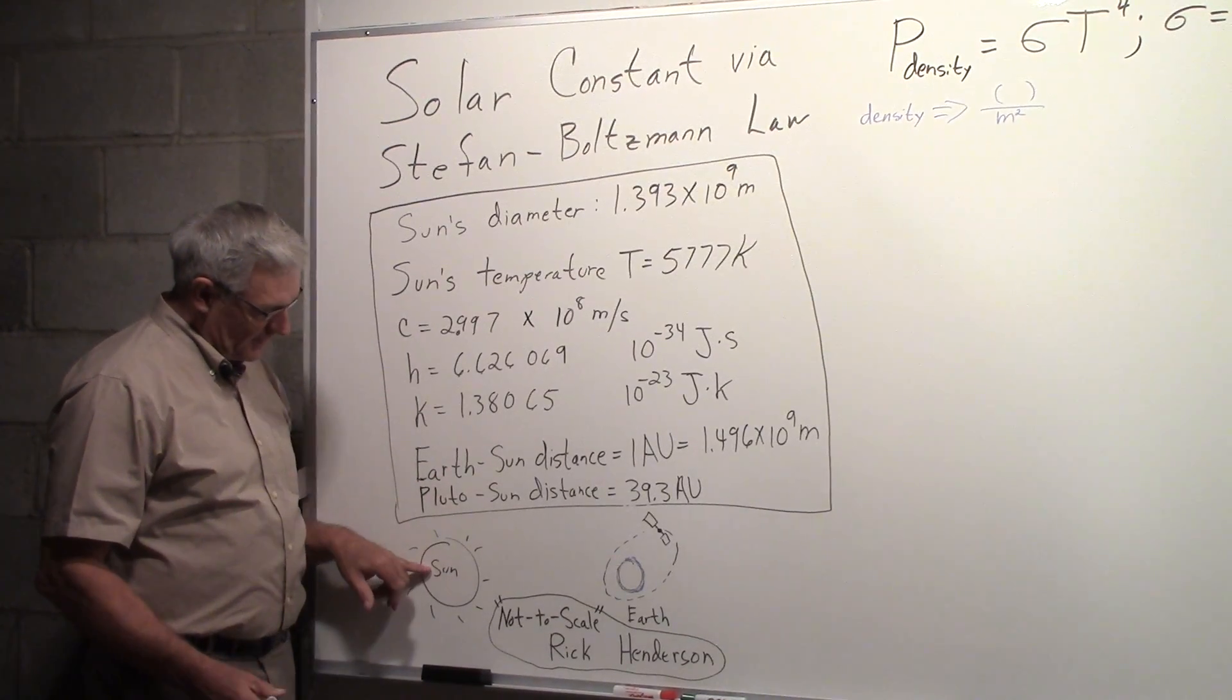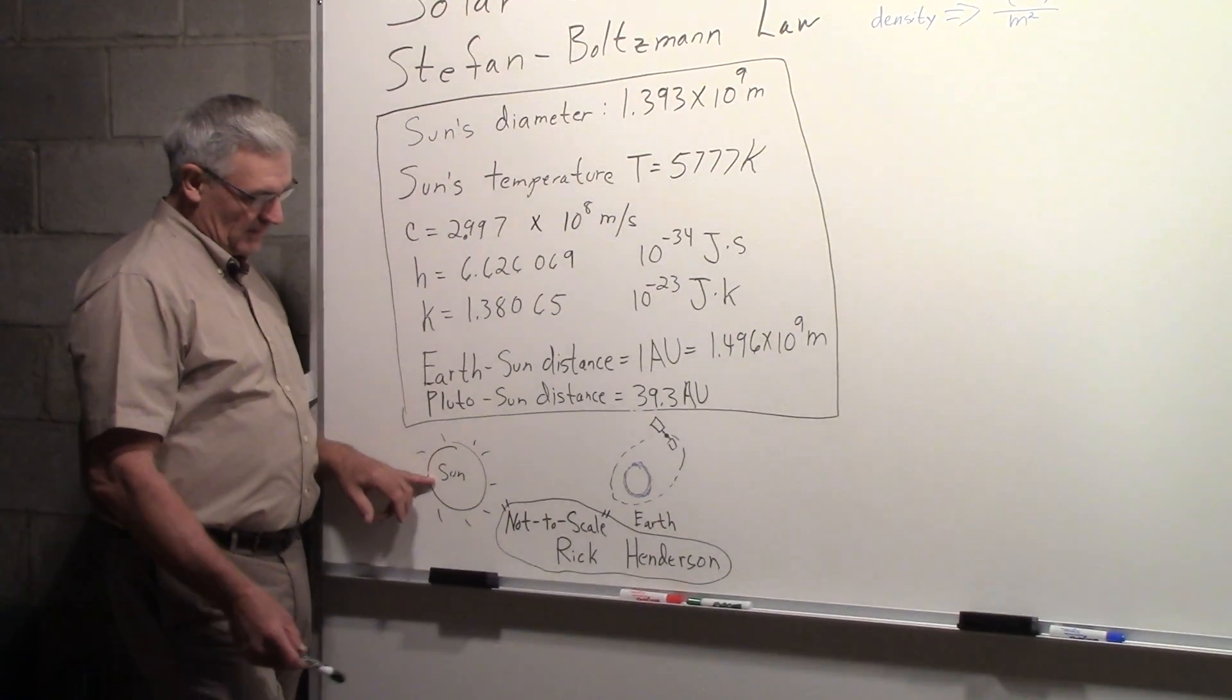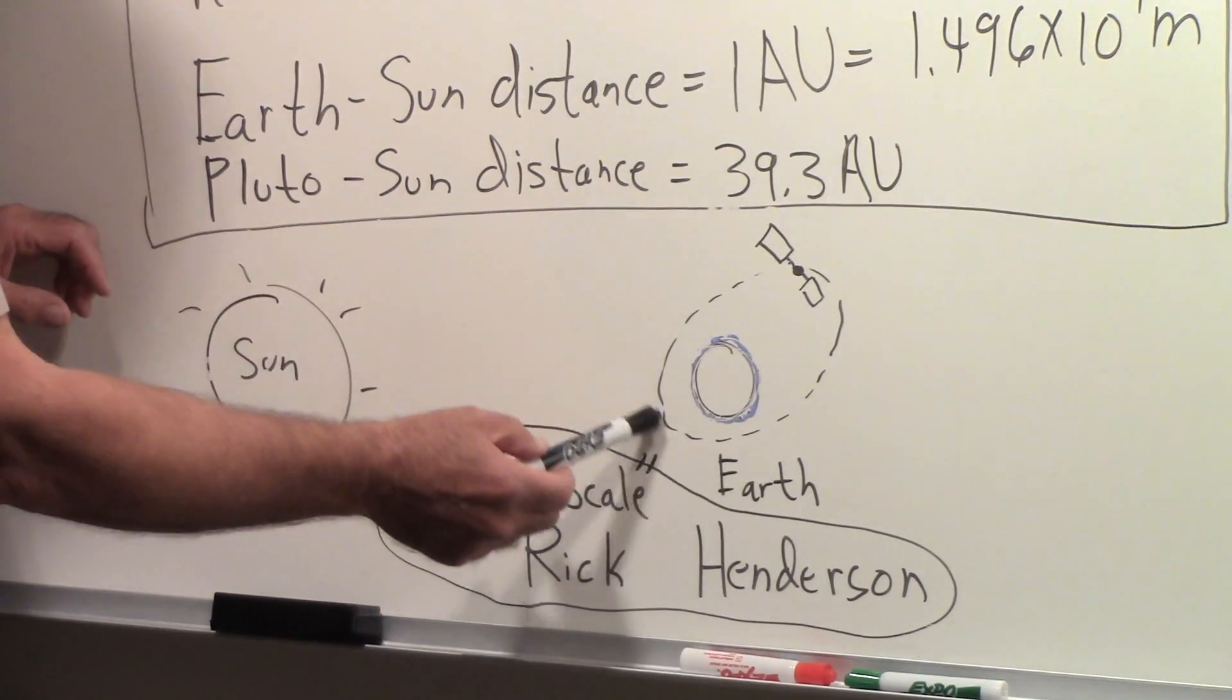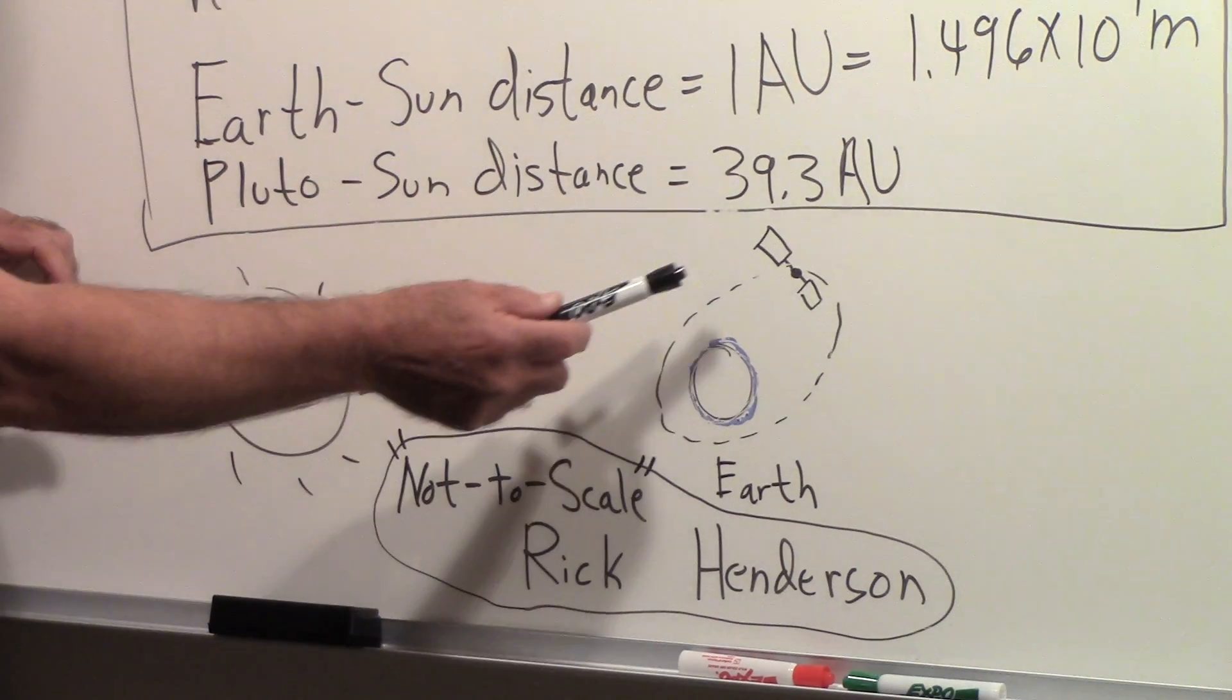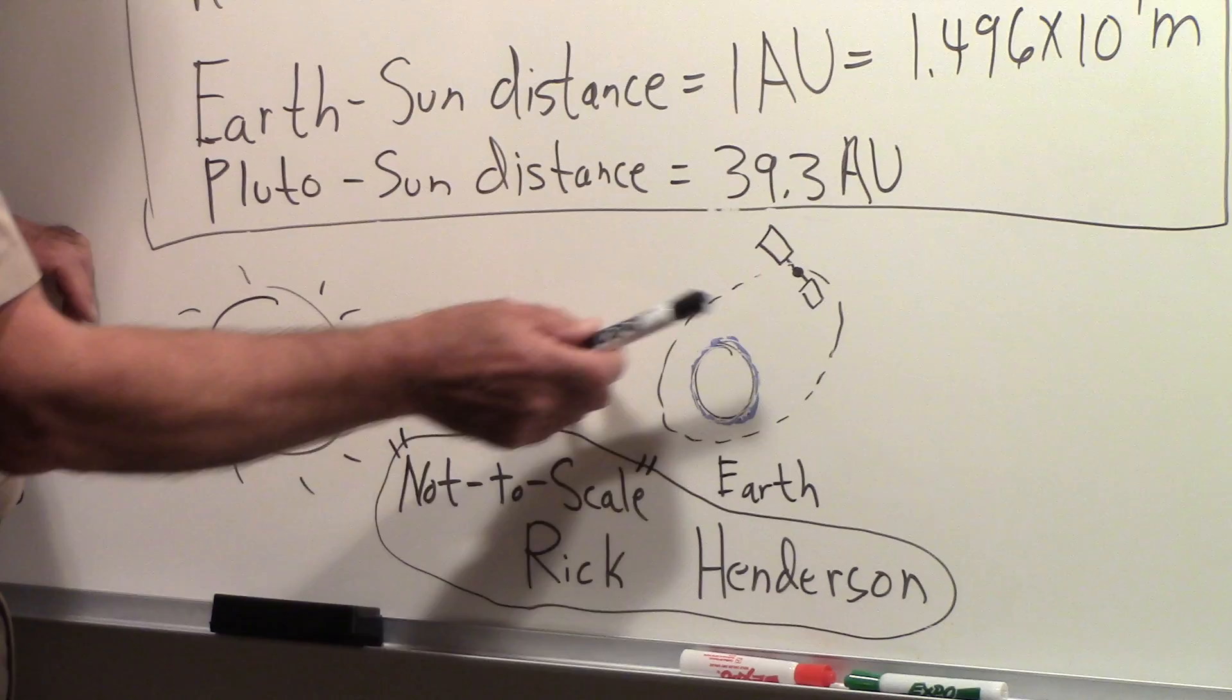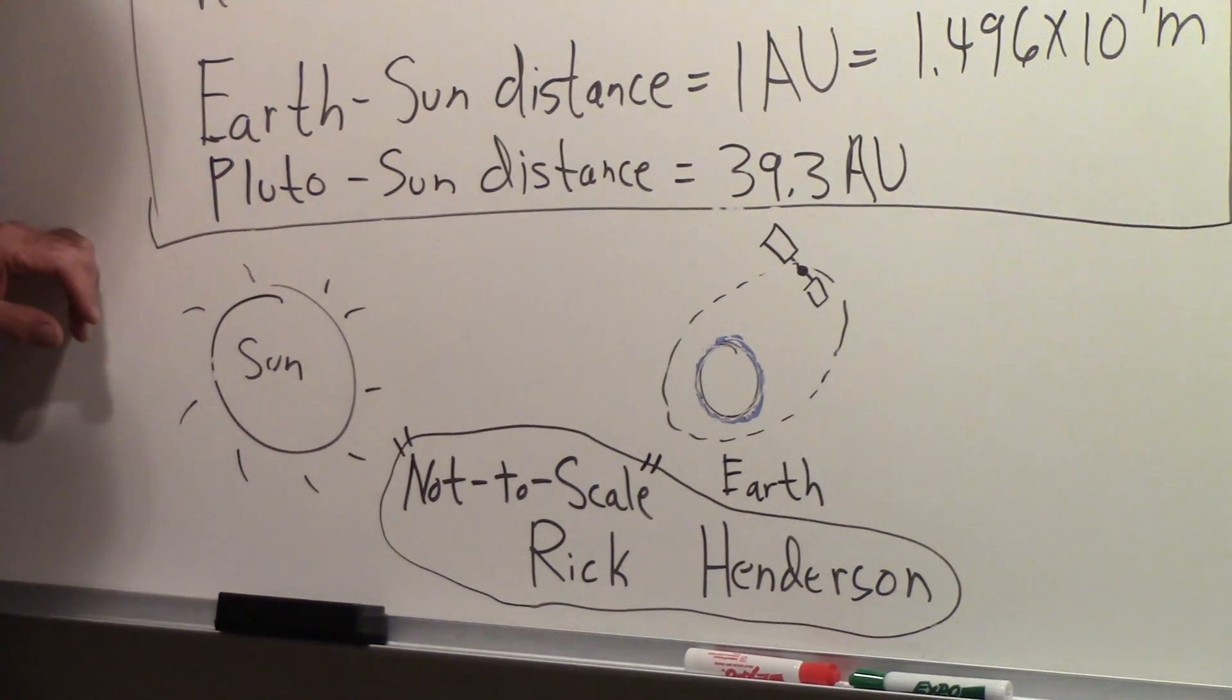So here is the Sun, and here's the Earth, and this number is useful for satellites going around the Earth because you can then figure out how much power you will get from the solar panels that are on those satellites.